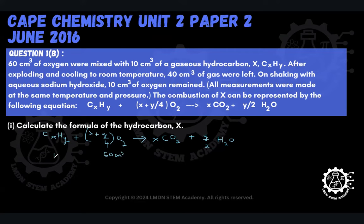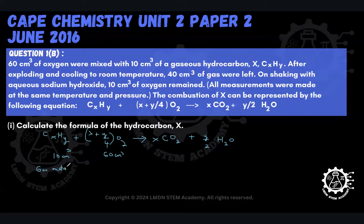We're mixing that with 10 cm³ of the hydrocarbon, so we're going to put 10 cm³ under our hydrocarbon CₓHᵧ. After the explosion, we get a gas mixture. Let's just note down that the gas mixture formed upon the explosion had a volume we'll call Z.